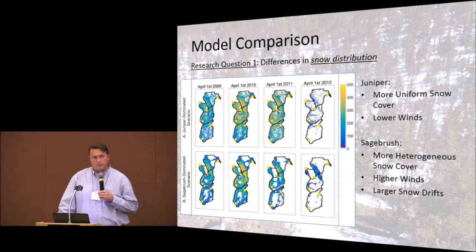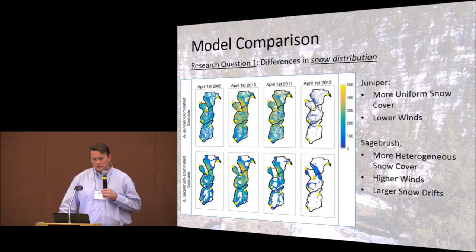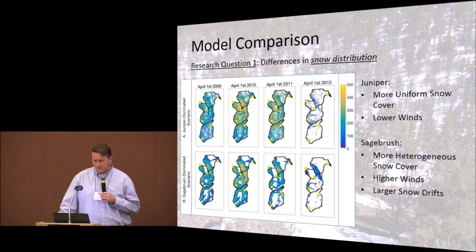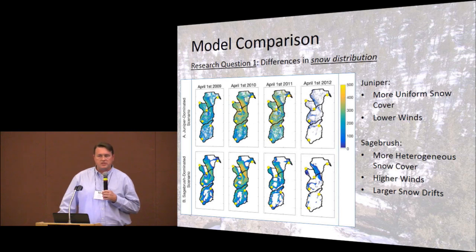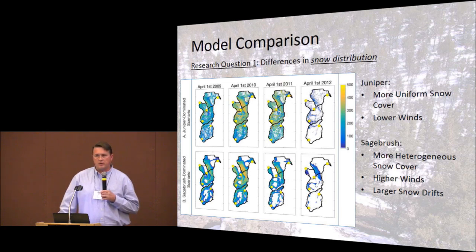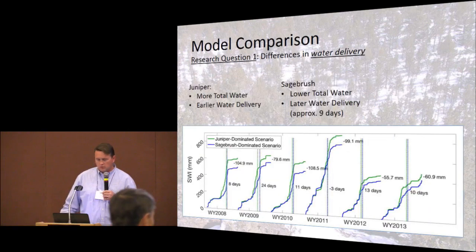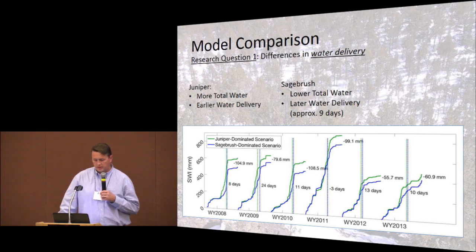Perhaps even more important than how much snow we have is how it's distributed. A key element from the modeling effort is that under the juniper-dominated scenario, snow cover tends to be more uniform — you can see the maps colored with snow water equivalent values more evenly across the four watersheds. Under the sagebrush condition, higher wind speeds, topography, and vegetation interact to form large snow drifts that tend to persist on the landscape for a longer period than the uniform cover under juniper.